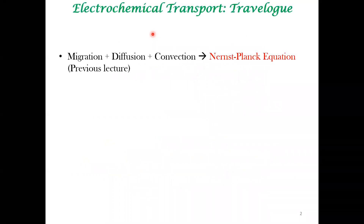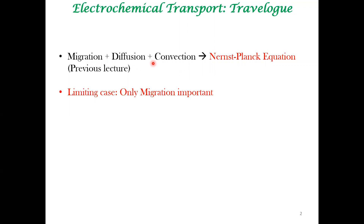In the previous class, we had introduced the Nernst-Planck equation. This equation takes into account three mechanisms: migration, diffusion, and convection. In this lecture, we will see how we can arrive at a limiting case wherein only migration is important — that is, the diffusion and convection terms are going to be negligible.